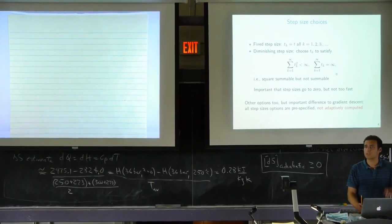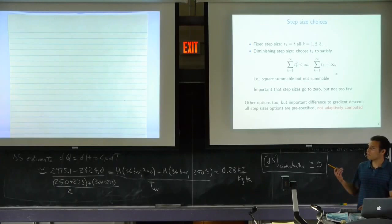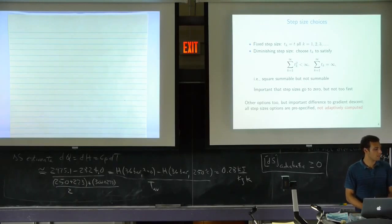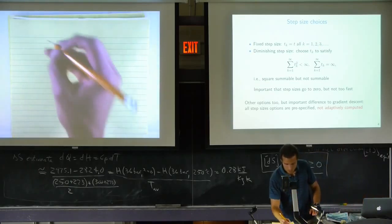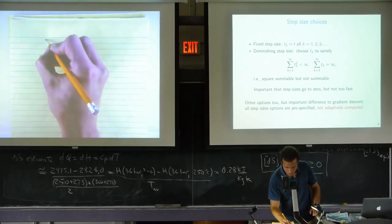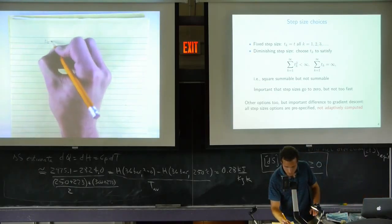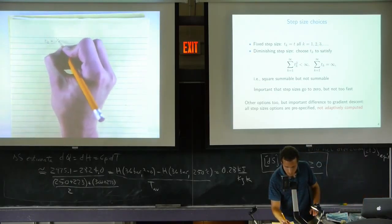Specifically, the squares of the t_k's, when summed, are less than infinity, but the t_k's themselves diverge. A perfectly acceptable choice satisfying this is t_k equals 1 over k. There's no analogy to backtracking in the subgradient method.